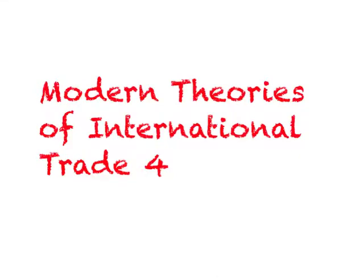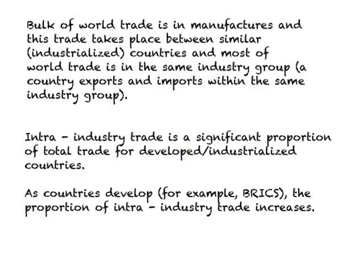We are looking at modern theories developed after the HOS model. This last theory in the section explains trade between developed or industrialized countries. If we break down world trade by countries, the bulk is in manufactured goods, taking place between similarly placed industrialized countries. Most of this world trade is within the same industry group — a country both exports and imports within the same industry. For example, the US will export cars and also import cars. This kind of trade is referred to as intra-industry trade.